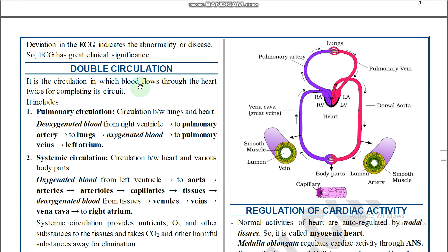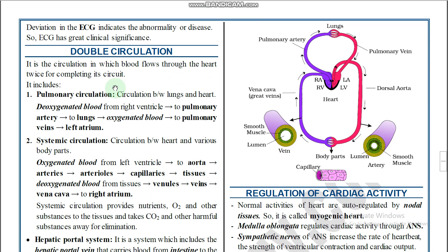Double circulation: our circulation is called complete double circulation because there are two different types — pulmonary circulation and systemic circulation. Pulmonary circulation is the circulation between the heart and the lungs. Systemic circulation is the circulation between the heart and the body parts.